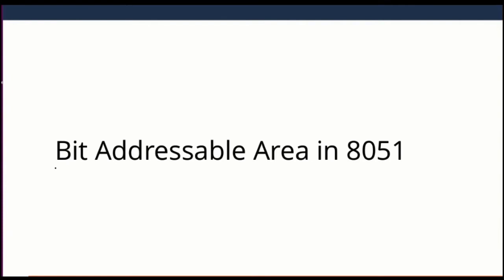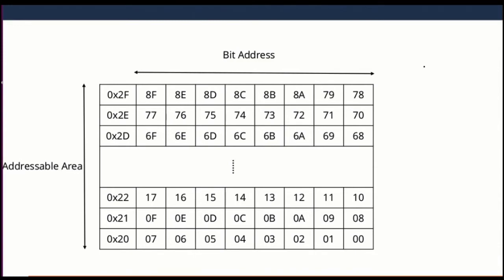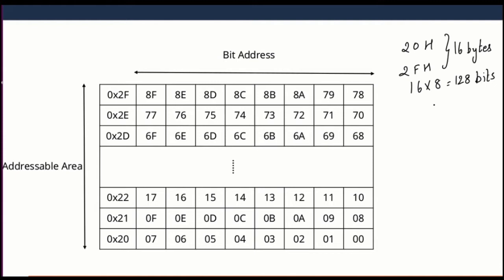Hi students, in today's lecture we will look at the Bit Addressable Area in AT51. The Bit Addressable Area starts from direct address 20H to 2FH, that is 16 bytes. All 8 bits of the 16 bytes — consisting of 128 bits — become bit addressable. So what do you mean by Bit Addressable?